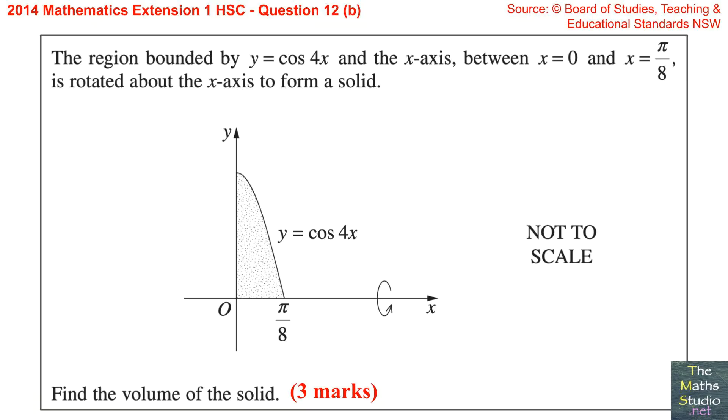Question 12, part b. The region bounded by y equals cos 4x and the x-axis between x equals 0 and x equals pi over 8 is rotated about the x-axis to form a solid. Find the volume of the solid.